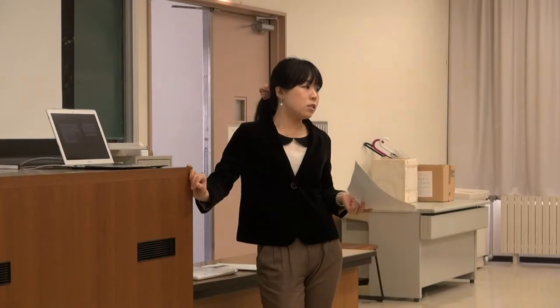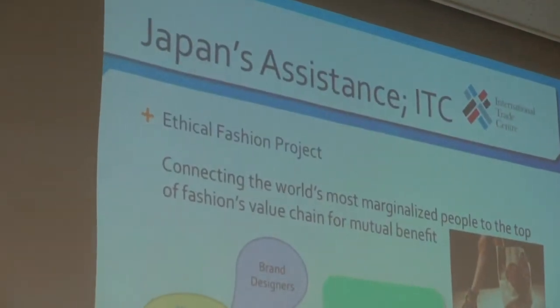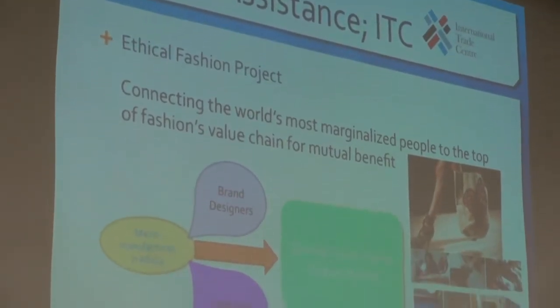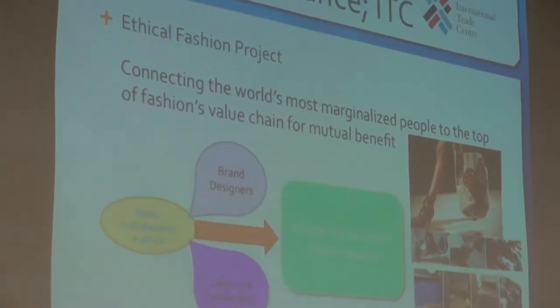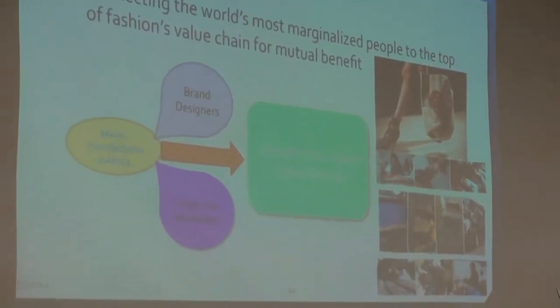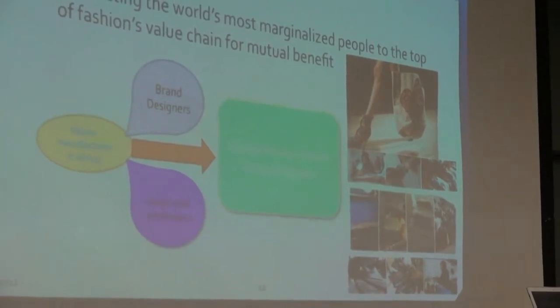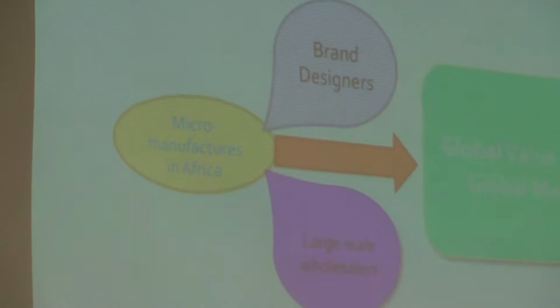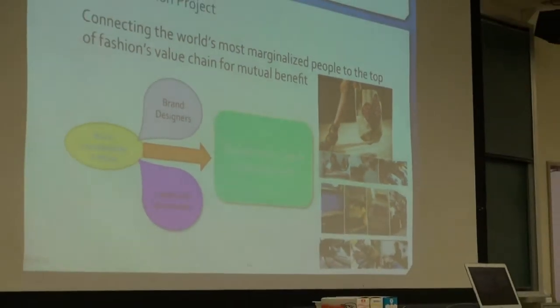The last topic is assistance under the International Trade Center. ITC stands for the International Trade Center — a joint center of the WTO and UNCTAD. Most of their projects aim to promote export through business expansion and providing assistance in export capacity building. Japan has provided support to a project called the Ethical Fashion Project.